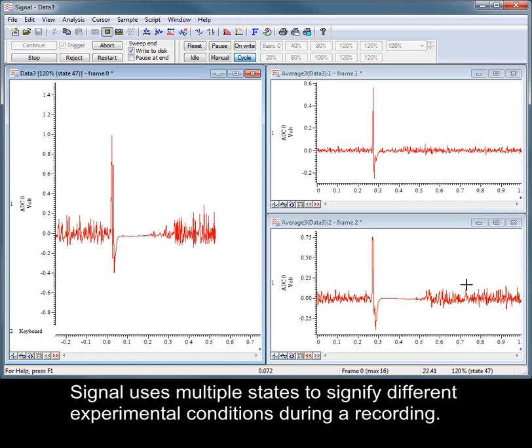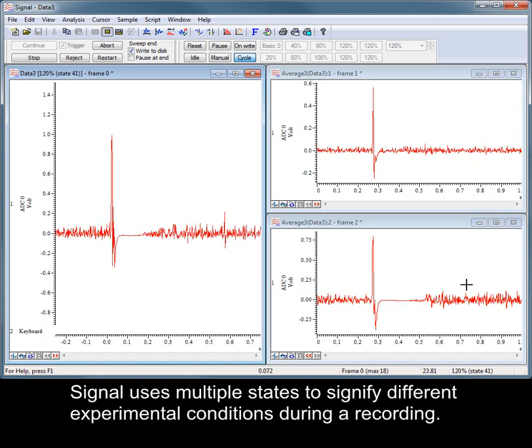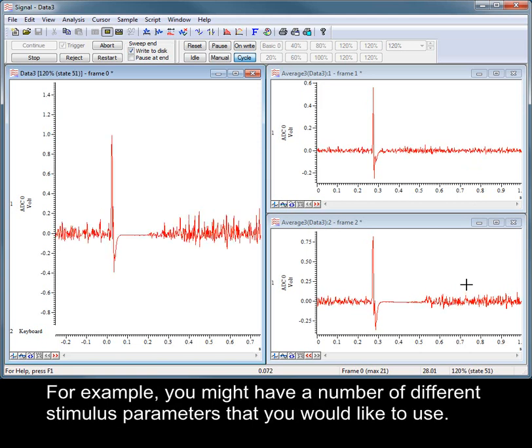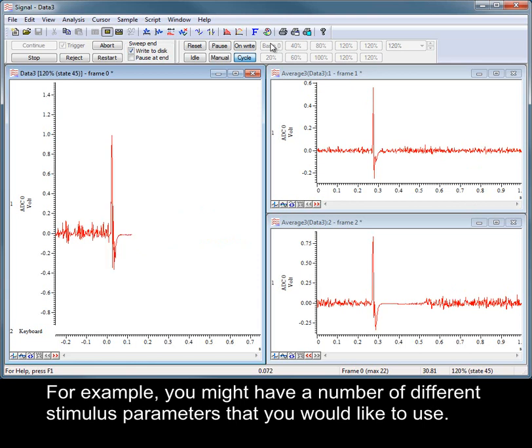Signal uses multiple states to signify different experimental conditions during a recording. For example, you might have a number of different stimulus parameters that you would like to use.